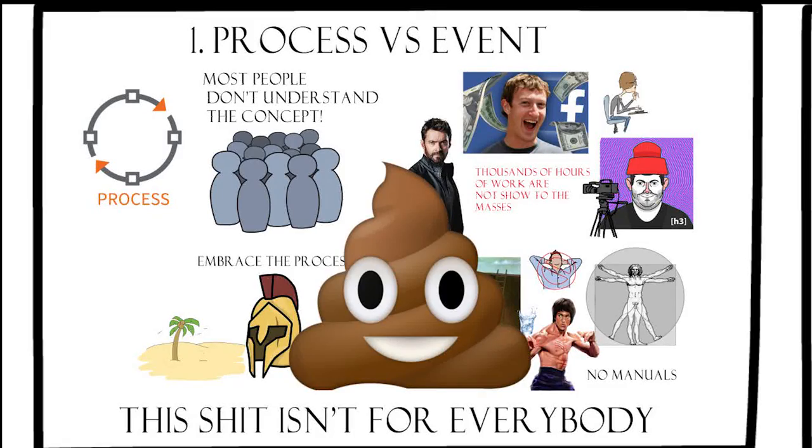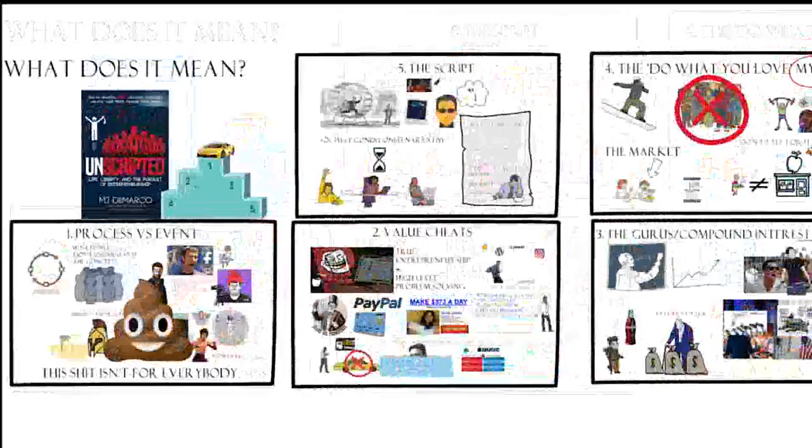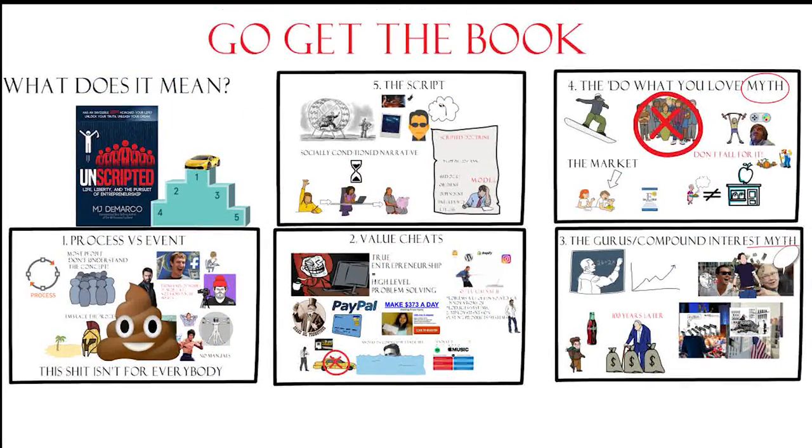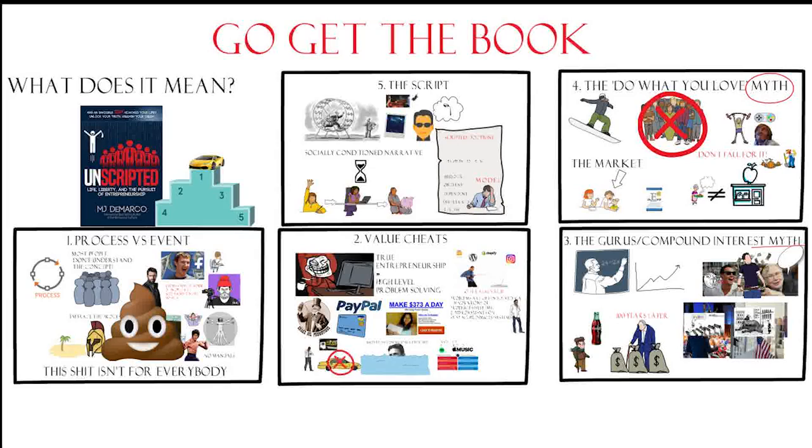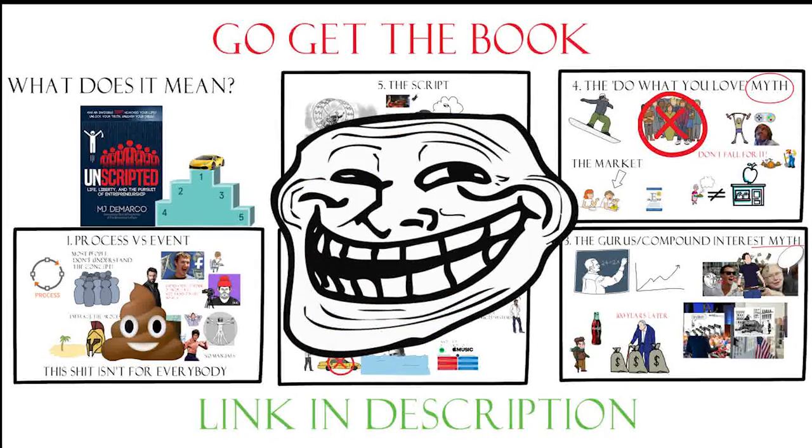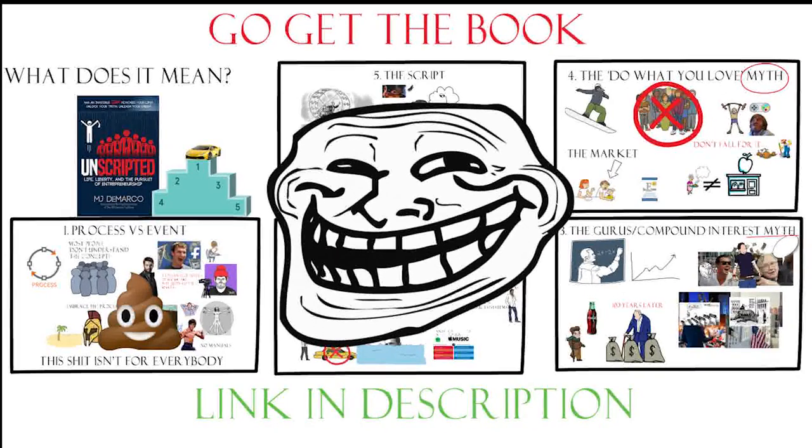Those are my top five takeaways. I highly suggest you guys check out MJ DeMarco's new book. It's one of my favorites. If you haven't read The Millionaire Fastlane go check that out. I've only scratched the surface here in terms of the content in the book. You're gonna have to read the book to really understand what's going on. And I've got a link in the description. It's gonna be an affiliate link because I'm one of those value cheats and whatnot. But anyway, I hope you guys like it. Peace. Until next time.